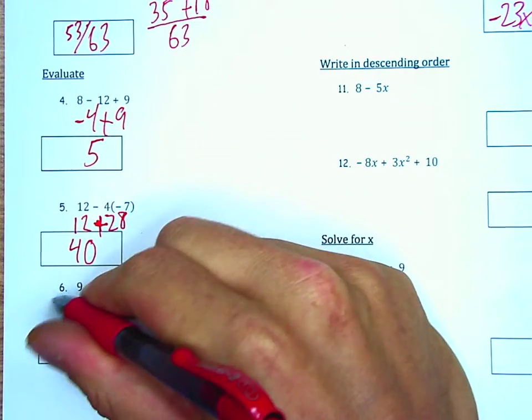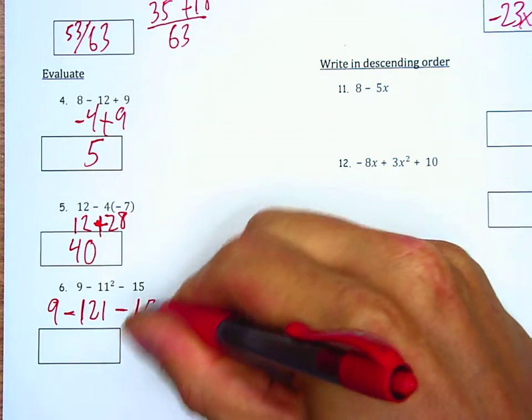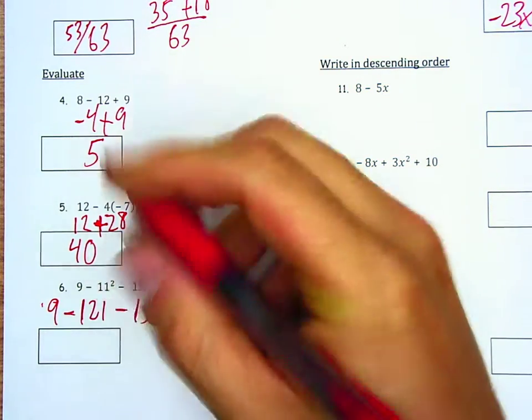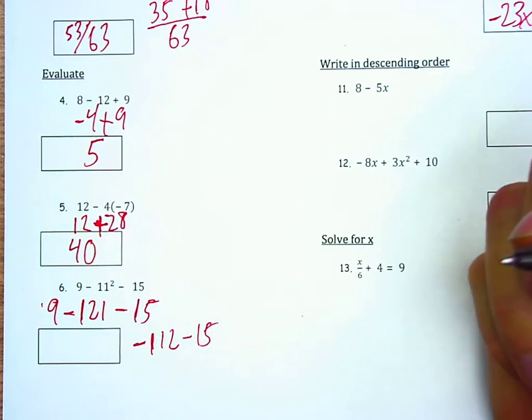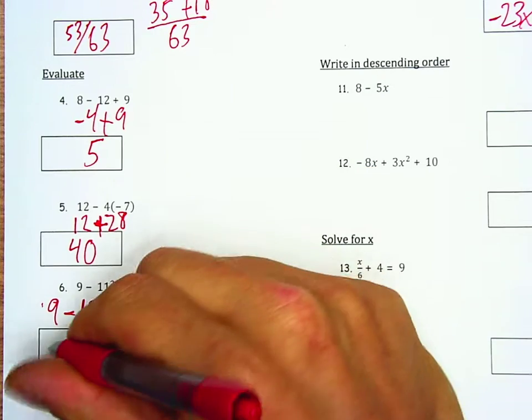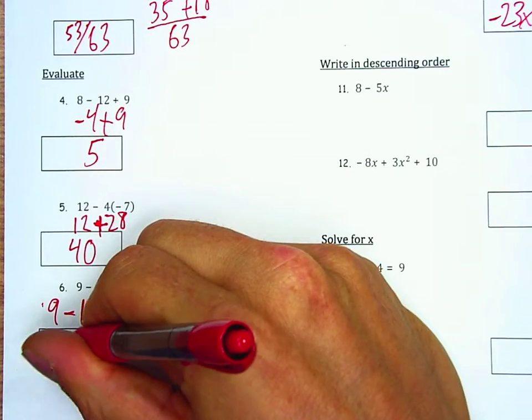Here I'm going to get 11 squared, which is 121. And then I'm going to subtract that from 9, which is going to be negative 112. And then I'm going to subtract 15 from negative 112 to get negative 127. That's my finished difference.